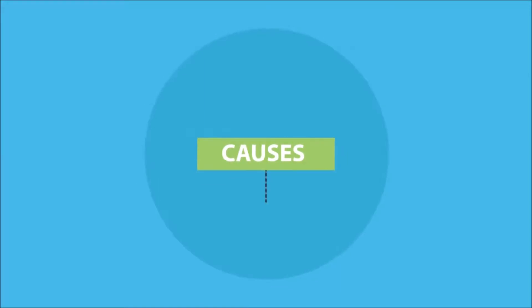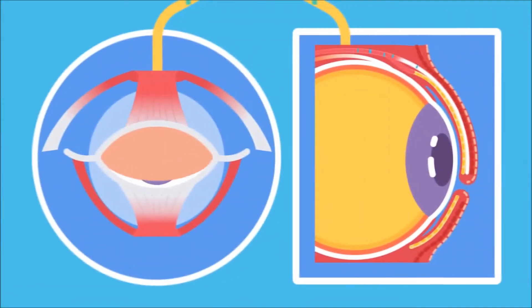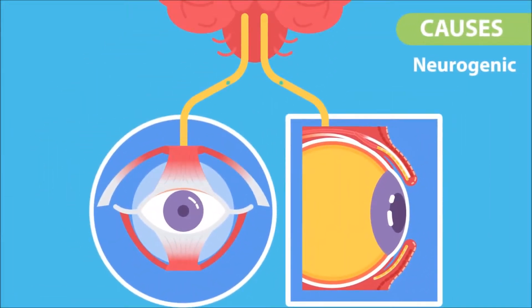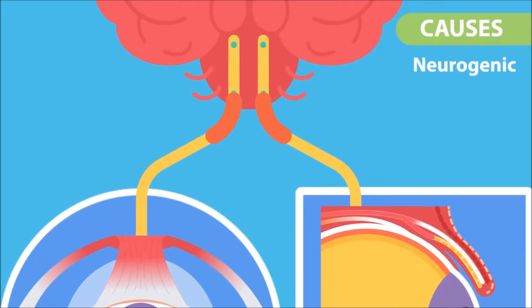Causes. These include acquired and congenital. Acquired include one: neurogenic. Basically there is an innervation defect of the muscles, and because nerves supplying the muscles are not working, the muscles will be unable to work properly.